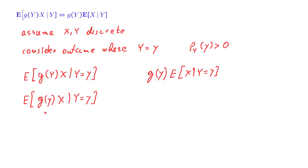But now, since this is a number, it can be pulled outside the expectation. So we have concluded that for any outcome for which the random variable capital Y takes this specific value little y, this random variable takes this value, this random variable takes this value, they are the same. So no matter what the outcome is, these two random variables take the same value, and therefore they are the same random variables.